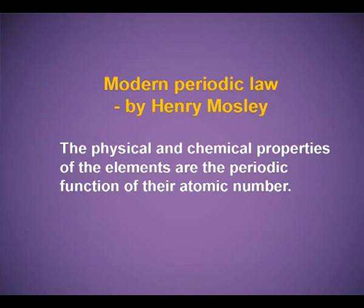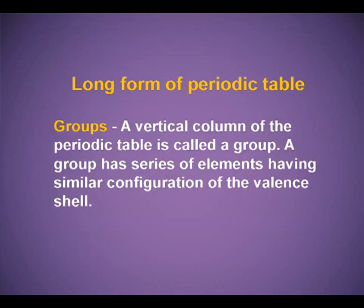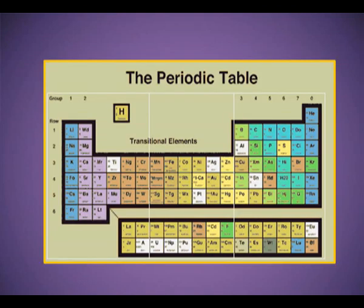Modern Periodic Law by Henry Moseley: the physical and chemical properties of the elements are the periodic function of their atomic number. The long form of the periodic table — periods are horizontal rows; a period consists of a series of elements having the same valence shell; total 7 periods numbered 1 to 7. Groups are vertical columns; a group has a series of elements with similar valence shell configuration. This is the modern periodic table — you can very well see the 7 periods and the 18 groups.